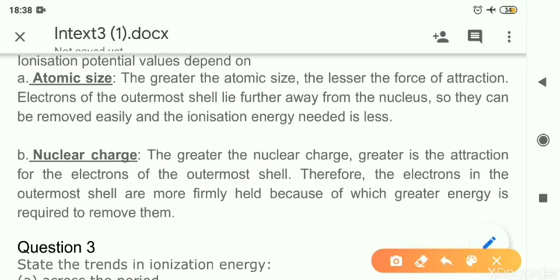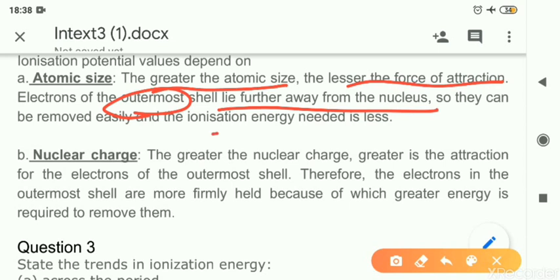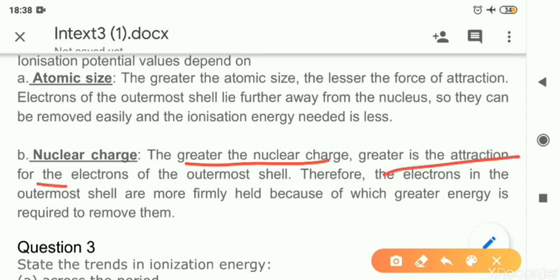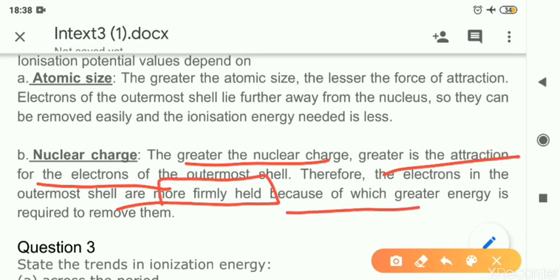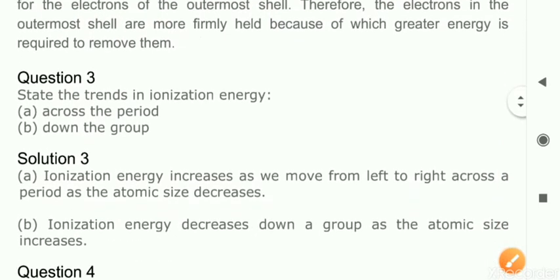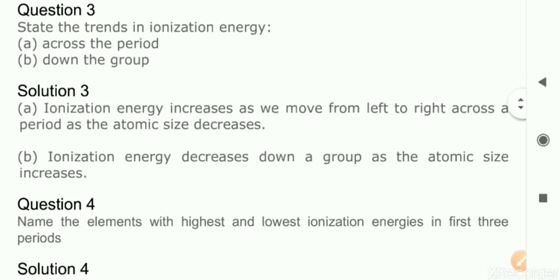Question 2: Ionization potential depends on two things — explain. First, atomic size: greater atomic size means the force of attraction reduces and outermost electrons are far from the nucleus, so less energy is required and ionization energy is less. Second, nuclear charge: greater nuclear charge means more attraction on the outermost electrons, so those electrons are more tightly held, requiring more energy to remove them.